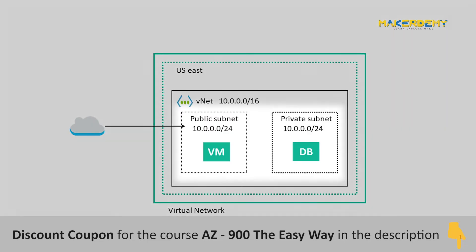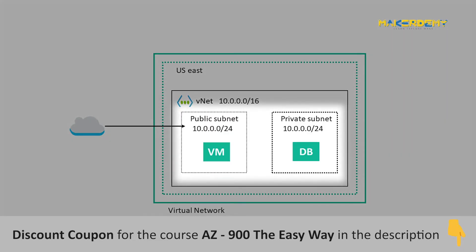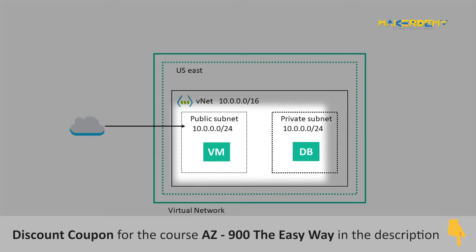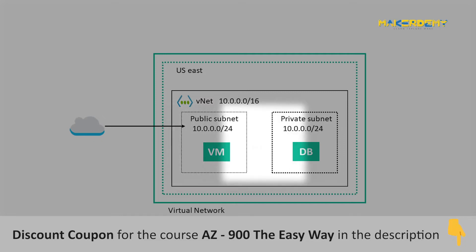Subnets are a logical partition of an IP network into multiple smaller segments — you are breaking up your VNet's IP range into smaller networks. A public subnet is one that can access the internet, while a private subnet is one that is not connected to the internet.